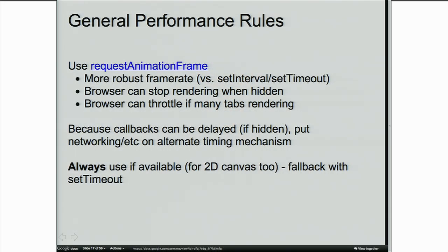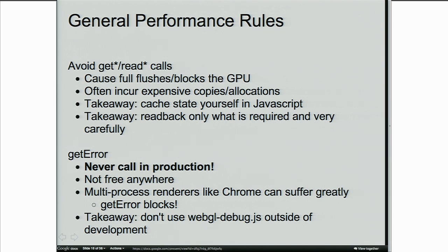Use requestAnimationFrame — it gives good behavior for your user in terms of power control, better browser management, and a more stable frame rate. Avoid any API in WebGL that begins with 'get' or 'read'; these generally cause GPU flushes, and in Chrome may even block the rendering process. getError() is an example of a 'get' that does that. The WebGLDebug.js layer uses getError(), so if you leave that on, you can drastically impact your performance. Always make sure debugging layers are off before performance testing, and don't ship with them enabled.